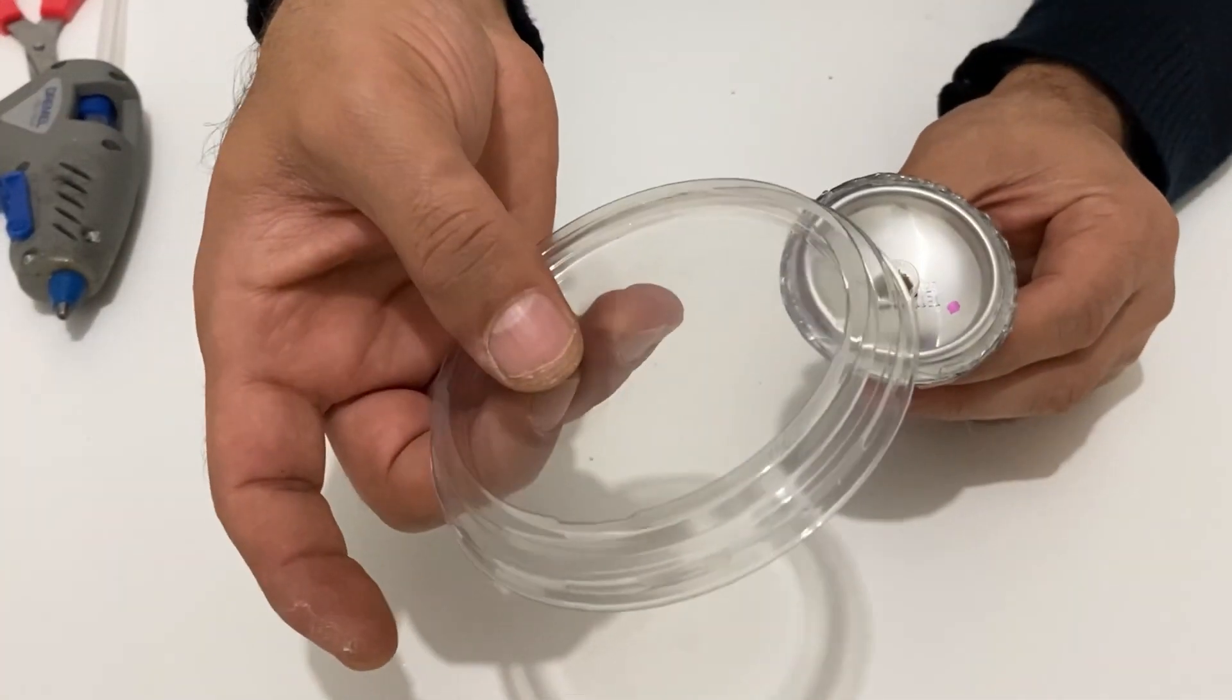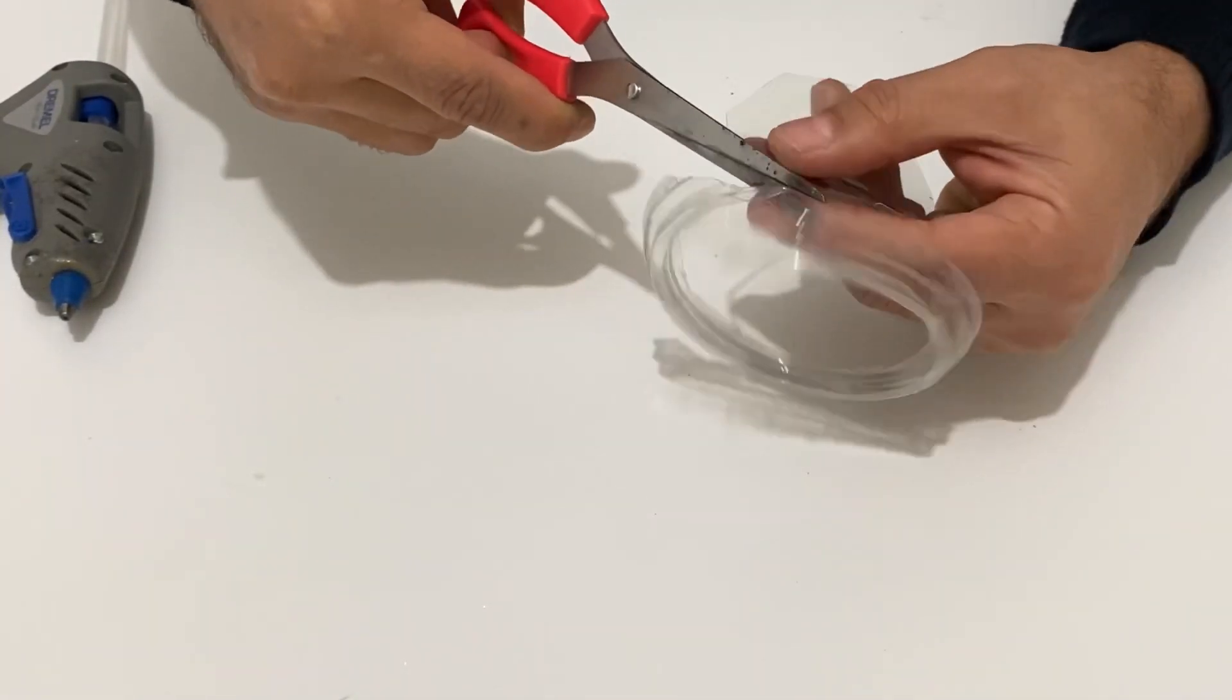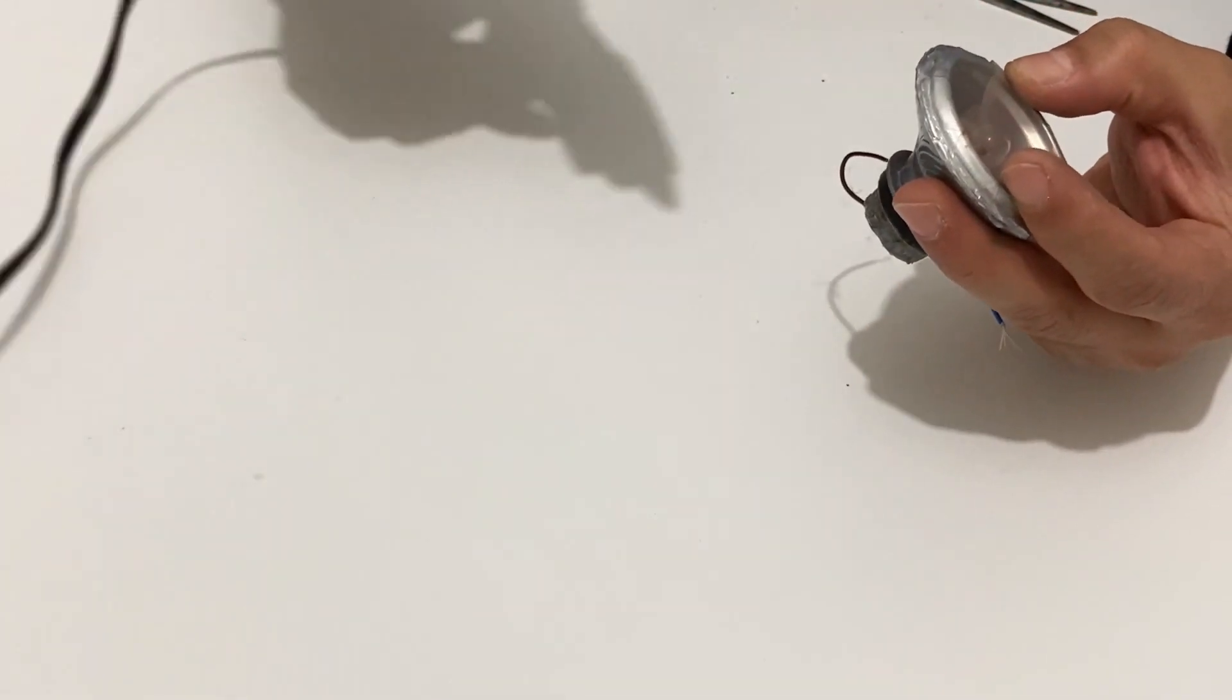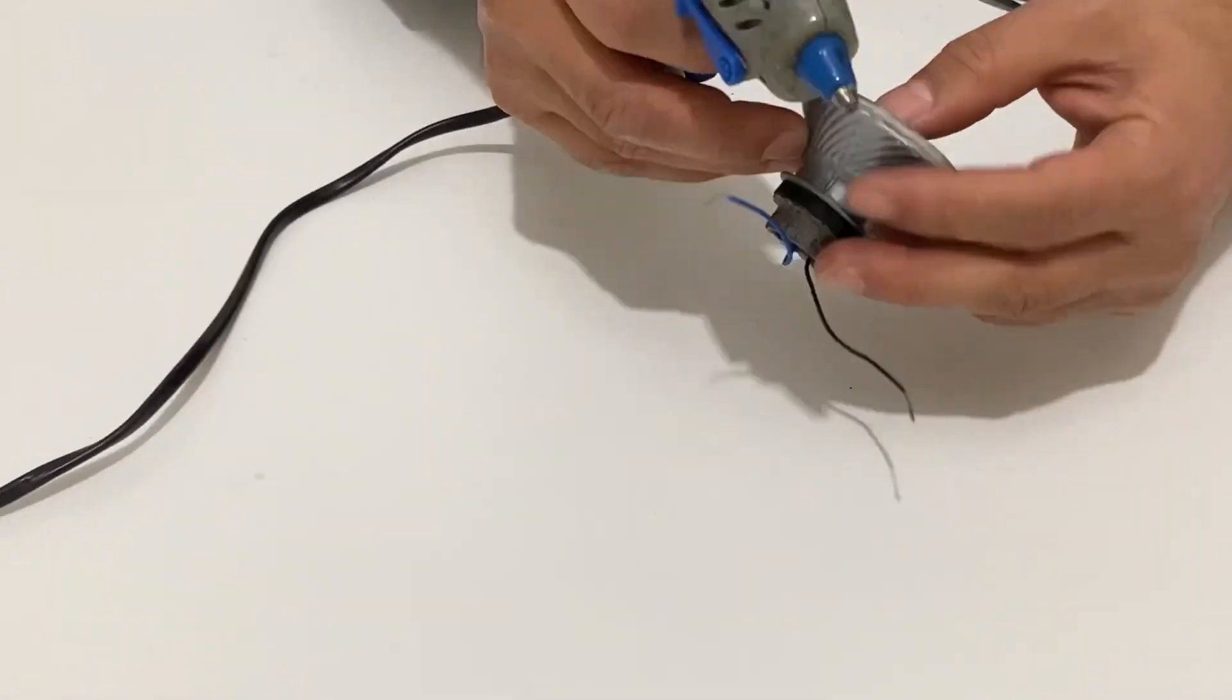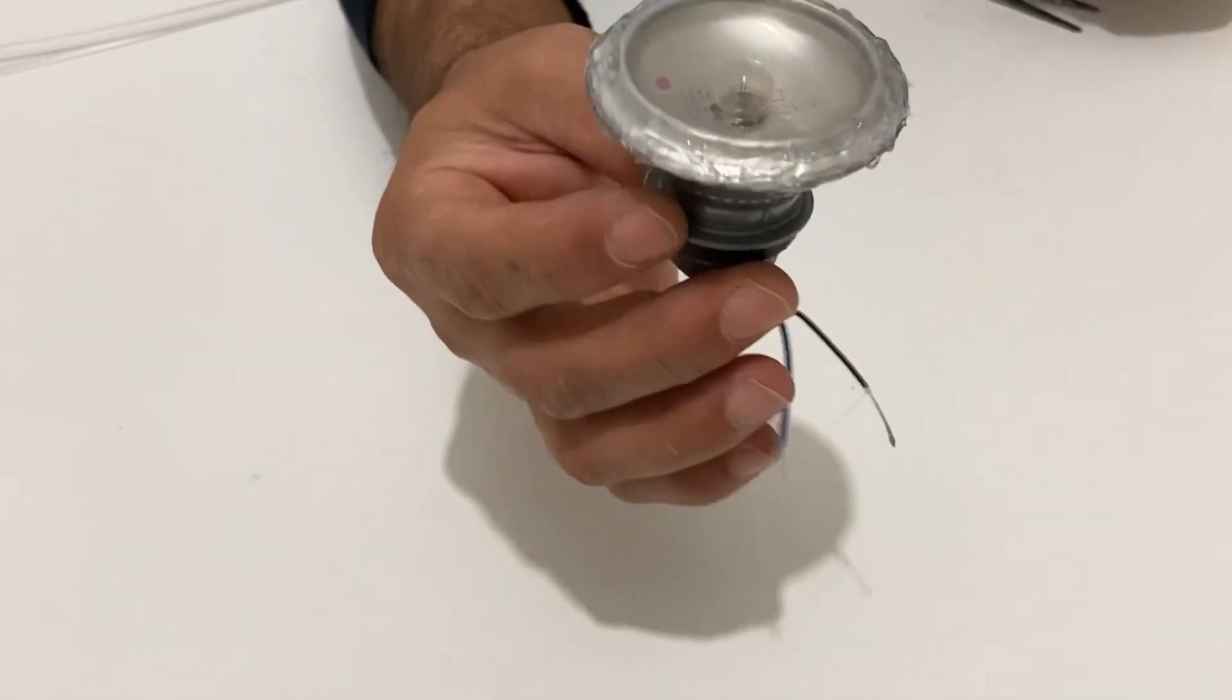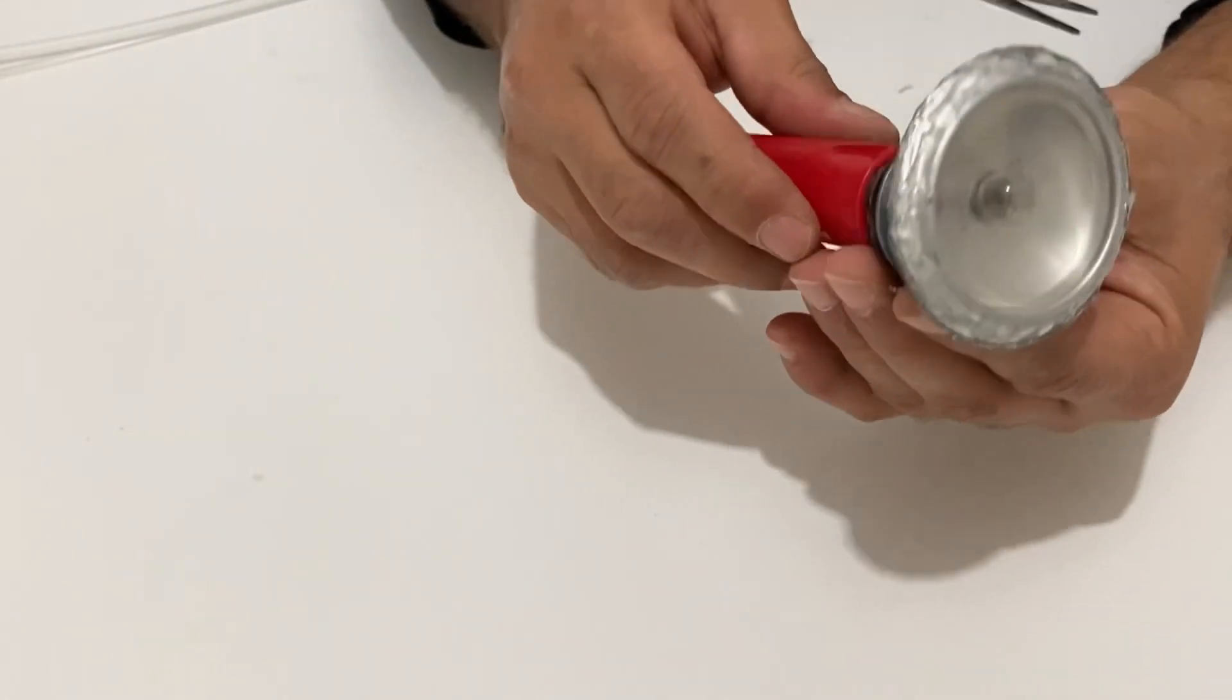Now I'm going to use this plastic to cover the mirror and apply some hot glue. We finished this part and it's time to put this into this one and make our torch.